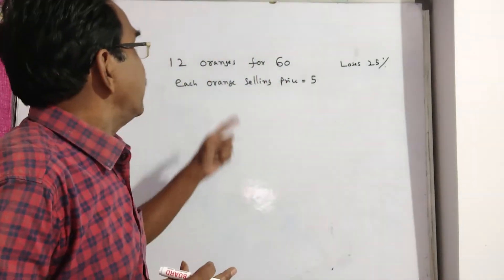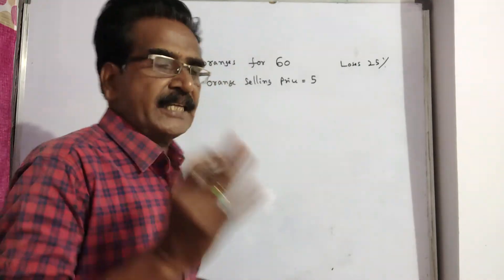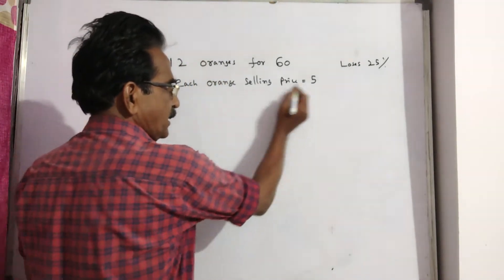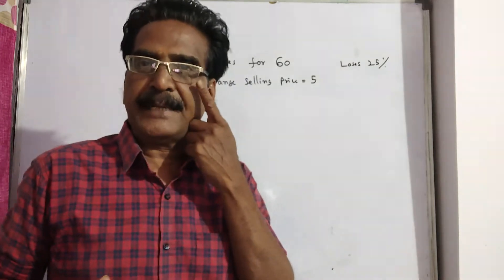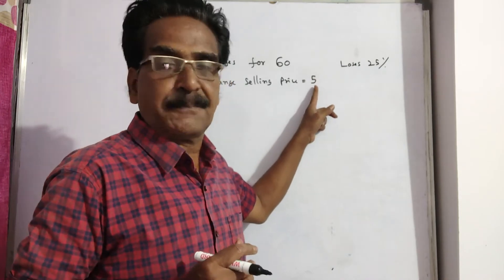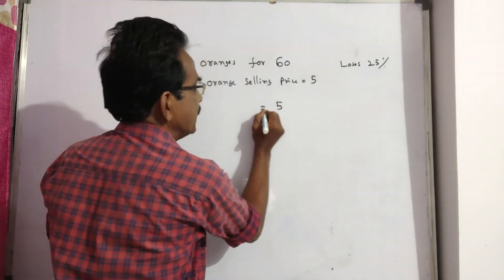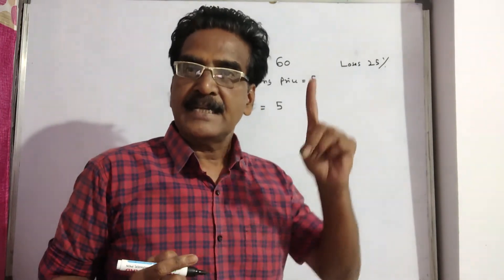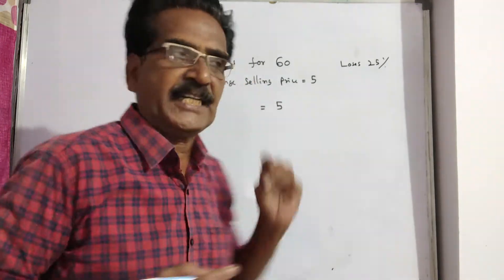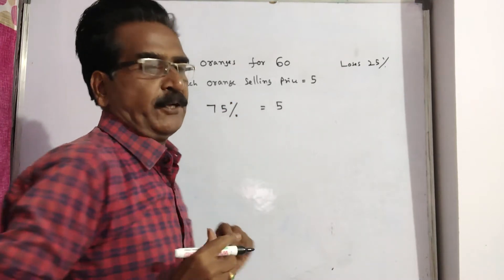He is selling 12 oranges for rupees 60, which means each orange's selling price is 5 rupees. If he is selling at this price and getting 25 percent loss, that means 5 rupees is equal to 75 percent of the cost price.